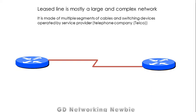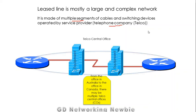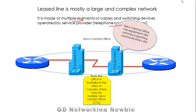A leased line is not just a single cable from one organization to another — it is mostly a large and complex network made of multiple segments of cables and switching devices operated by the service provider. The service provider may be a telephone company, or telco. From the office in Australia to the office in Canada, there may be multiple telco central offices with equipment like switches and other supporting equipment to support the communication link between these two points.